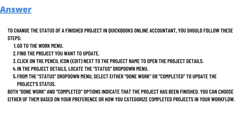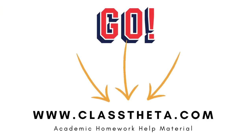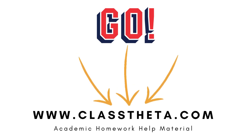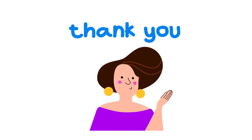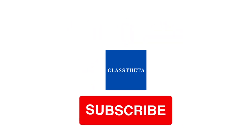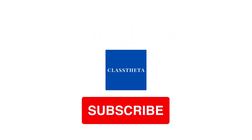Both 'Done Work' and 'Completed' options indicate the project has been finished. You can choose either of them based on your preference or how you customize projects in the workflow. That's the answer. Thank you very much for watching the video. If you have any other questions, just leave a comment and I will get back to you as soon as I can. Thank you very much, until next question, bye bye.